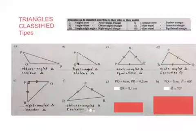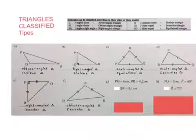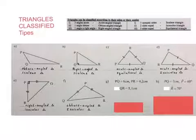This is an obtuse angled triangle — one angle is obtuse. It's also an isosceles triangle because the two sides are equal.